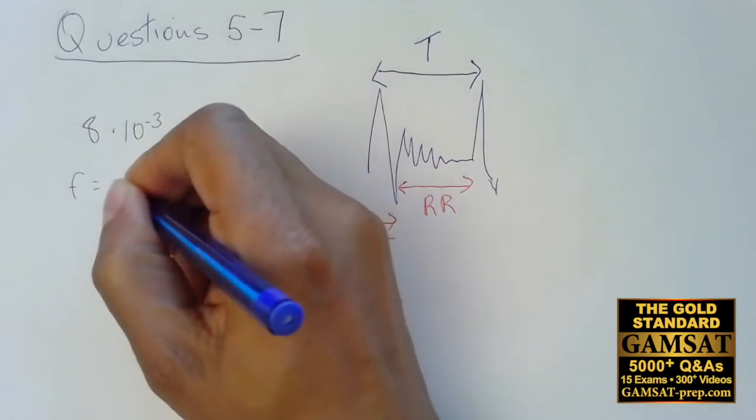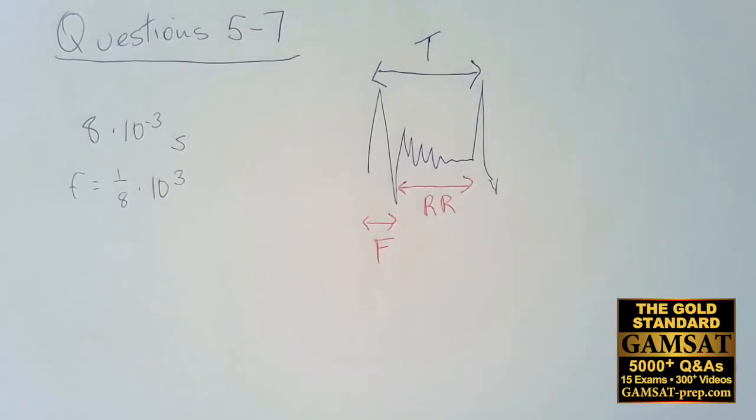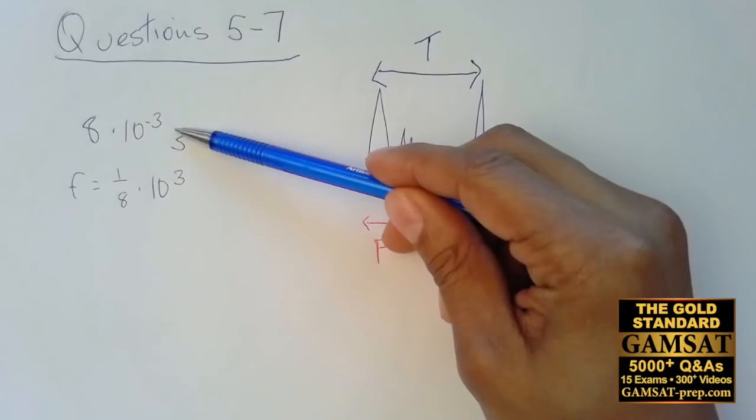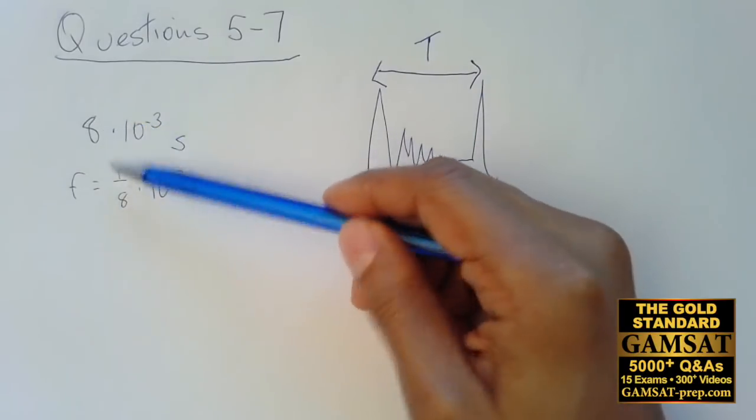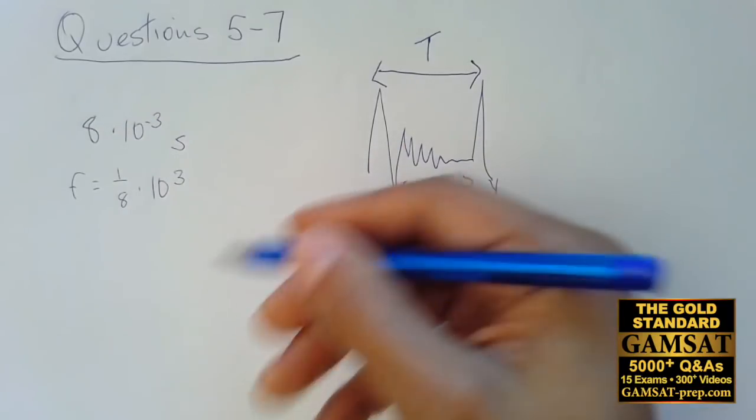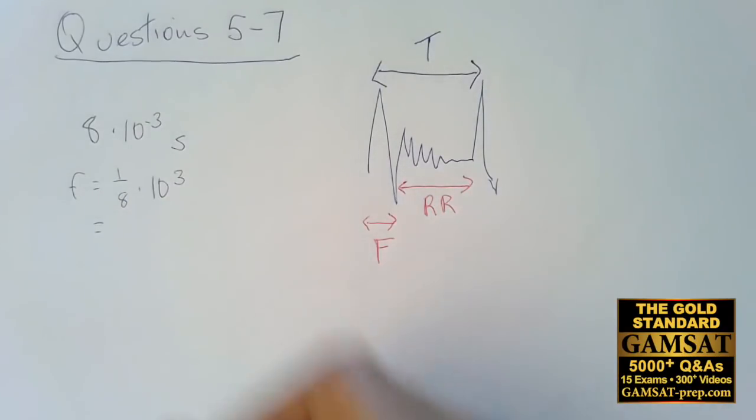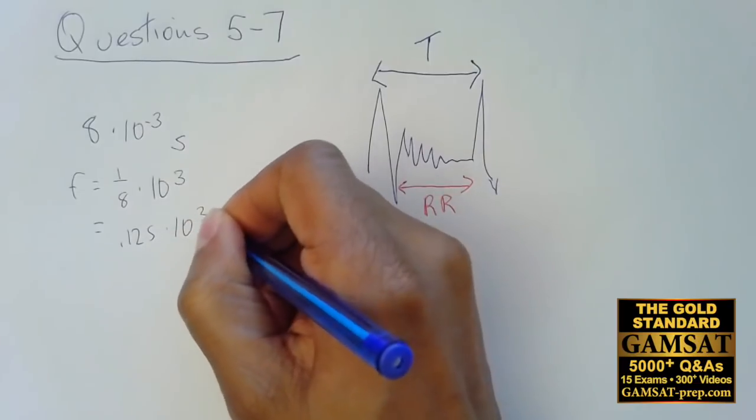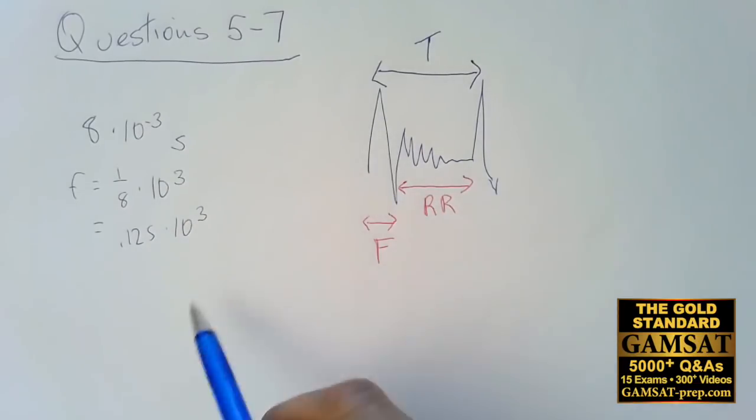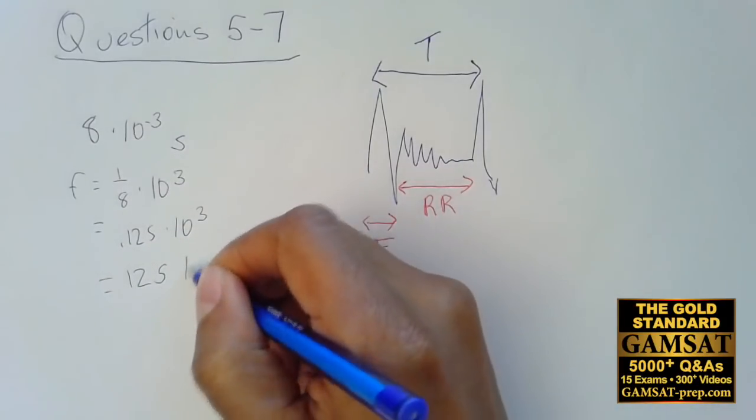So we know we have 8 times 10 to the minus 3 seconds, because that's 8 milliseconds. And frequency, and since that is the period, frequency is going to be 1 over that. So we have frequency is going to be 1 over 8 times 10 to the 3. Because if you take the inverse of 10 to the minus 3, it's just going to be 10 to the 3. And the inverse of 8, of course, is going to be 1 over 8. So 1 over 8 is 0.125. And that's times 10 to the 3. So that's 125 Hertz.